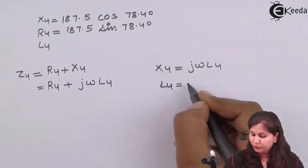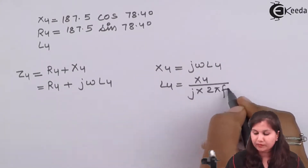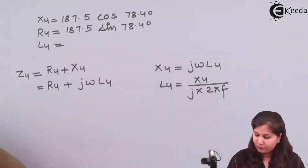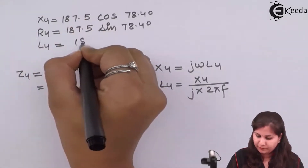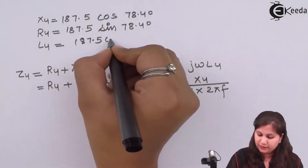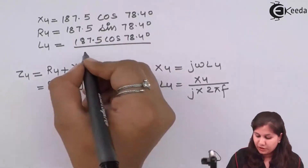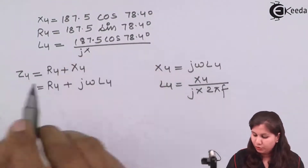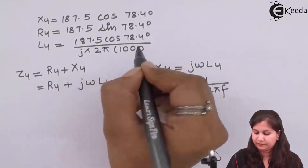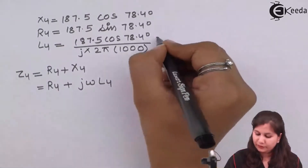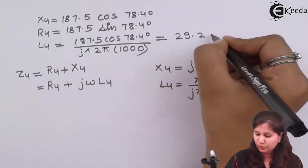Since X4 = jωL4, we have L4 = X4 / (2πf). So L4 = (187.5 × cos(78.4°)) / (2π × 1000). Solving this gives the inductance L4 = 29.2 mH.